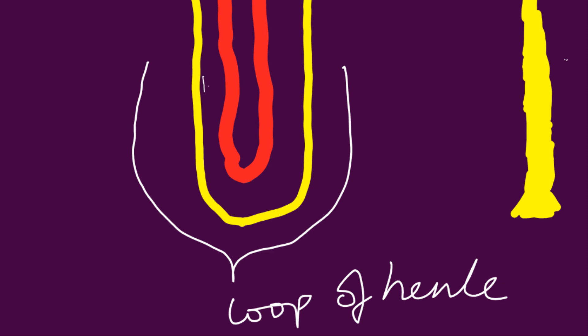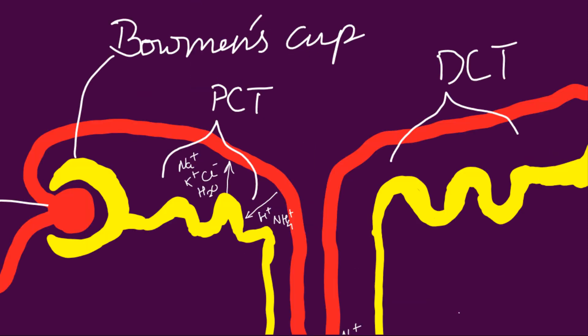In the descending loop of Henle, water is reabsorbed into the capillaries, and in the ascending loop of Henle, sodium and chloride ions are absorbed into the blood. In the distal convoluted tubules, sodium, bicarbonate and water are reabsorbed into the blood, whereas potassium and hydrogen ions are absorbed into the distal convoluted tubule. In the collecting duct, urea and water are again reabsorbed into the blood.